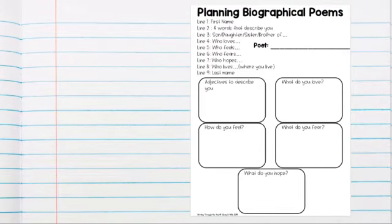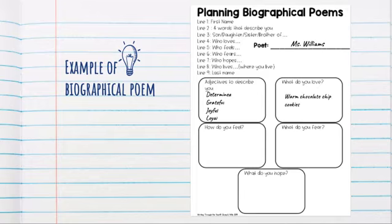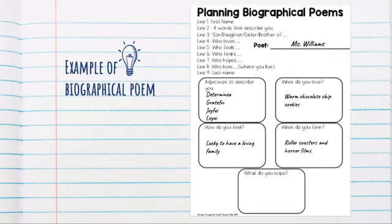Let's take a look at the example I showed you yesterday of my biographical poem planning sheet. I began by putting my name on the poet line and then I began listing things for each line. For line two I added four adjectives that describe me. For line three I skipped that one because I already know it. Line four I added something I love: warm chocolate chip cookies. Line five I added how I feel — lucky to have a loving family. Line six I added my fears of roller coasters and horror films. Line seven I added what I hope for — that people can show kindness to people who are different than them.